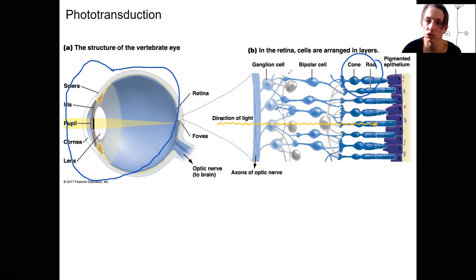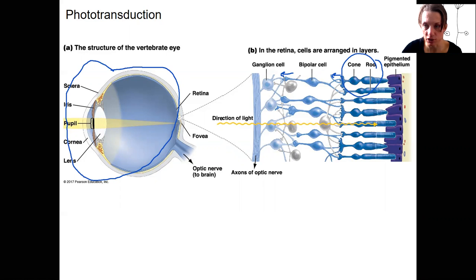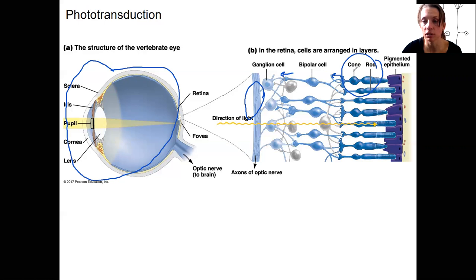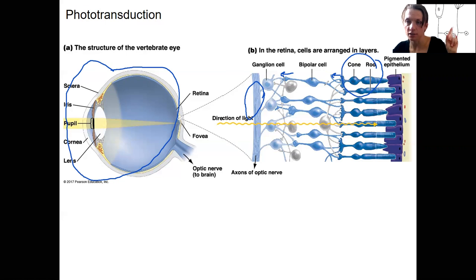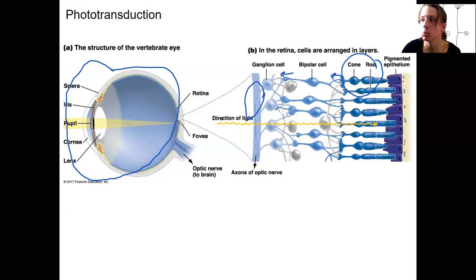They do not carry action potentials directly to the central nervous system. They transmit chemical messengers via action potentials to the bipolar cells, which then transmit to the ganglion cells. The ganglion cells are where the action potentials travel to the central nervous system. These specialized cells are actually releasing chemical messengers just next door — that's what makes them a special sense, unlike cells that have axons traveling all the way to the central nervous system.